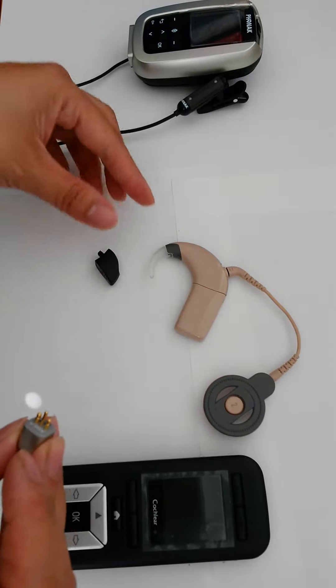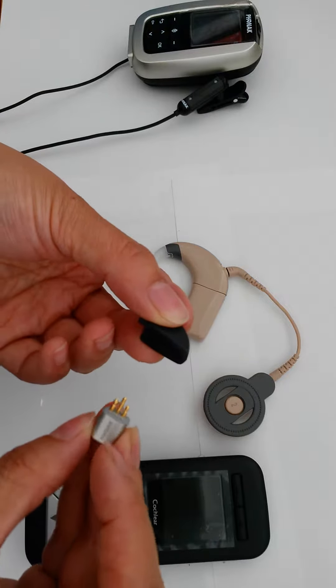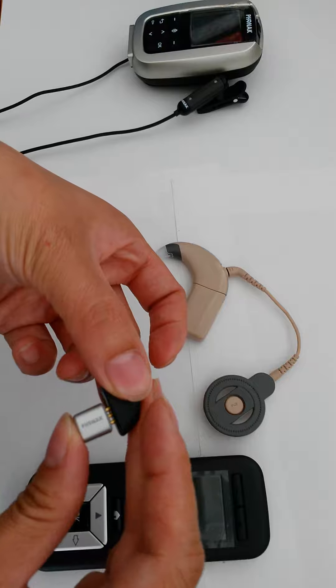align the pins on the receiver with the holes on the aural adapter so that the biggest pin is in line with the biggest hole. Insert the receiver into the adapter until it clicks.